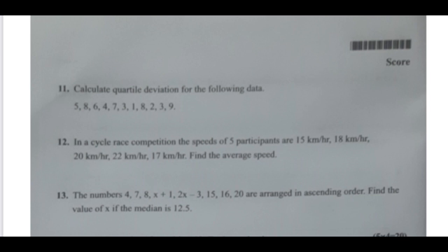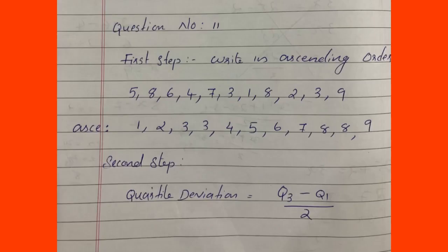In the next step, calculate the quartile deviation for the following data in an individual series: 5, 8, 6, 4, 7, 3, 1, 8, 2, 3, 9. The first step is to arrange the data in ascending order. In ascending order: 1, 2, 3, 3, 4, 5, 6, 7, 8, 8, 9.